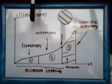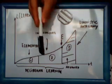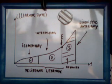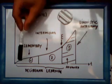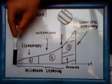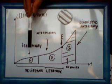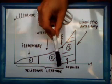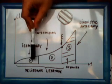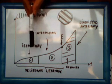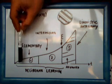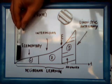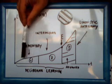So, to recap: this is a graph that explains the learning rate, the time, and the efficiency. The learning rate represents the efficiency of learning and acquiring a language. There are three main phases. The two first phases — elementary and intermediate — are deliberate learning. The reason why a lot of people give up is because the rate is low — the efficiency of learning is a little bit low.